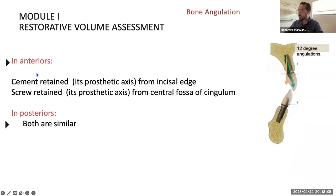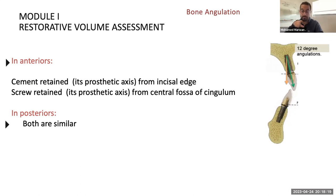For anterior implants, the prosthetic axis of a cement-retained restoration runs from the incisal edge, while for screw-retained restorations the access channel exits from the lingual surface to avoid visible channels. In the posterior, the prosthetic axis for both cement- and screw-retained restorations exits through the central fossa.